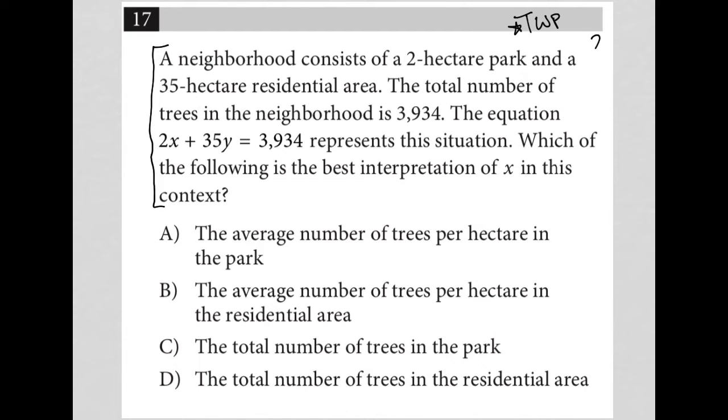The first sentence says a neighborhood consists of a 2-hectare park and a 35-hectare residential area. So I'm going to write: 2 goes with the park, and 35 goes with the residential area. The total number of trees in the neighborhood is 3,934. So 3,934 equals trees.